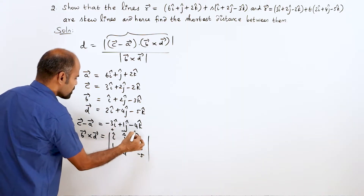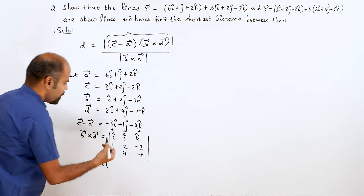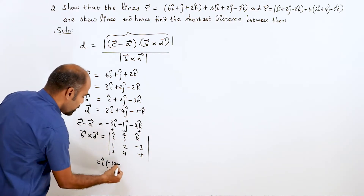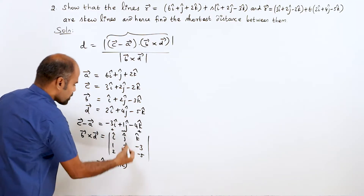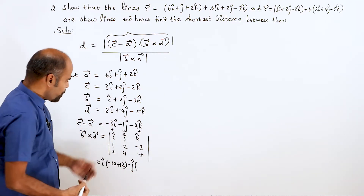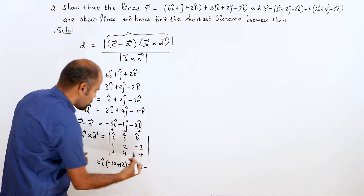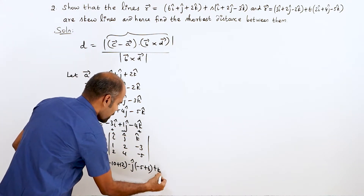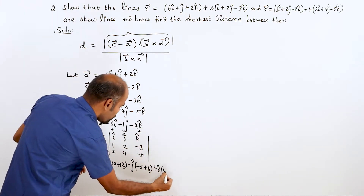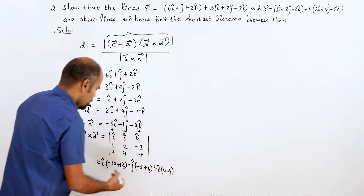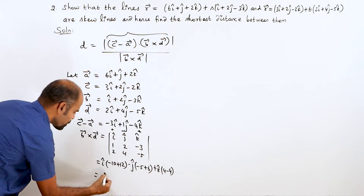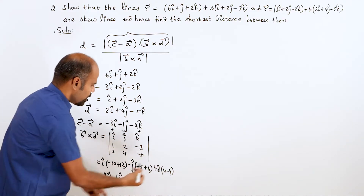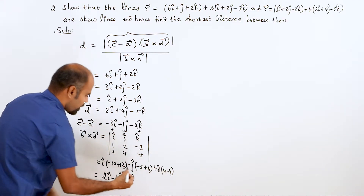Expanding the determinant with plus, minus, plus signs: i cap into (2 × minus 5 minus minus 3 × 4) = minus 10 plus 12 = 2; minus j cap into (1 × minus 5 minus minus 3 × 2) = minus 5 plus 6 = 1, so minus 1j cap; plus k cap into (1 × 4 minus 2 × 2) = 4 minus 4 = 0k cap. Therefore b vector cross d vector = 2i cap minus j cap plus 0k cap.